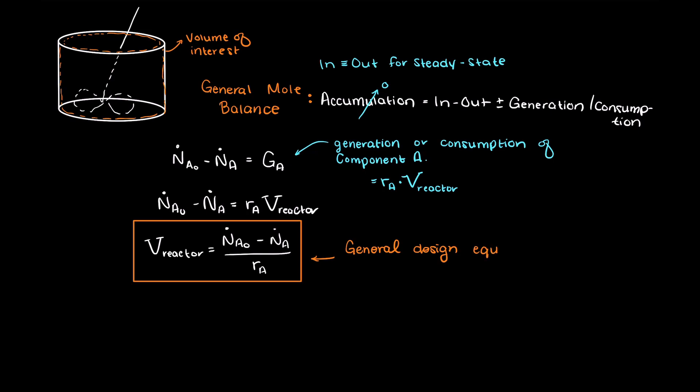There is actually one more interesting thing that we can do with this equation for CSTRs. We can solve for the volume of our reactor simply by rearranging our equation. This is called the general design equation for a CSTR.